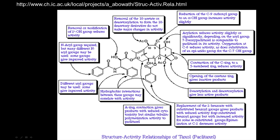Removal or modification of the OH group reduces activity. Hydrophobic interactions between certain groups may correlate with activity — two benzene rings could have benzene-benzene stacking. A ring contraction gives products with reduced cytotoxicity but similar tubulin polymerization activity to Paclitaxel. Opening of a ring gives inactive product; contraction of the C ring to a 5-membered ring reduces activity; deacetylation gives less active product. Reduction of the C9 carbonyl to an alpha-OH group increases activity slightly; removal of the 10-acetate does not make major change in activity. Some locations have major impact, others minor impact on activity.